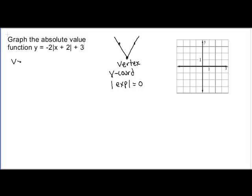So if I want to go about finding the vertex of this problem, to get the x coordinate, I have to set x plus 2, which is inside the absolute value, equal to zero. If I solve that, I get x equals negative 2.